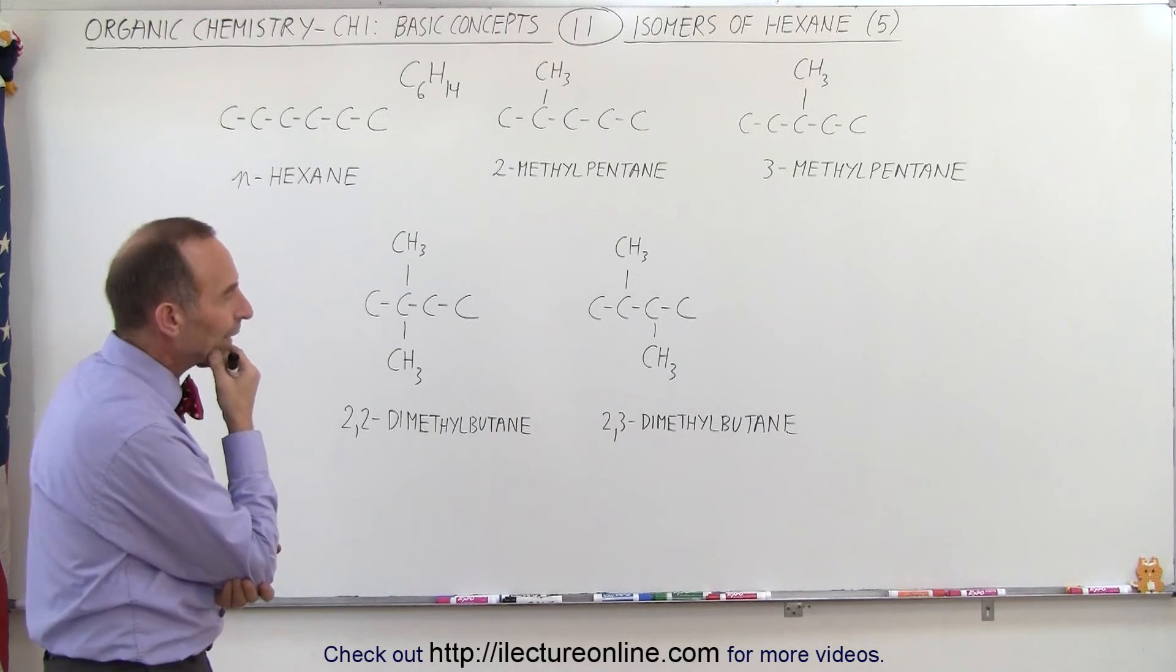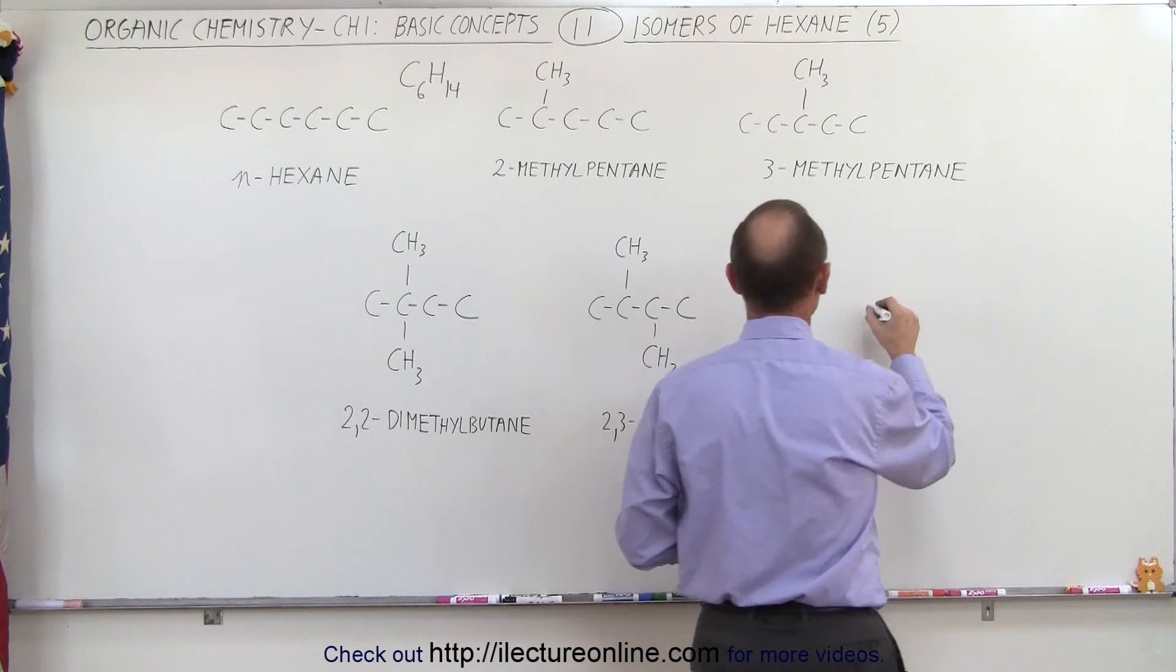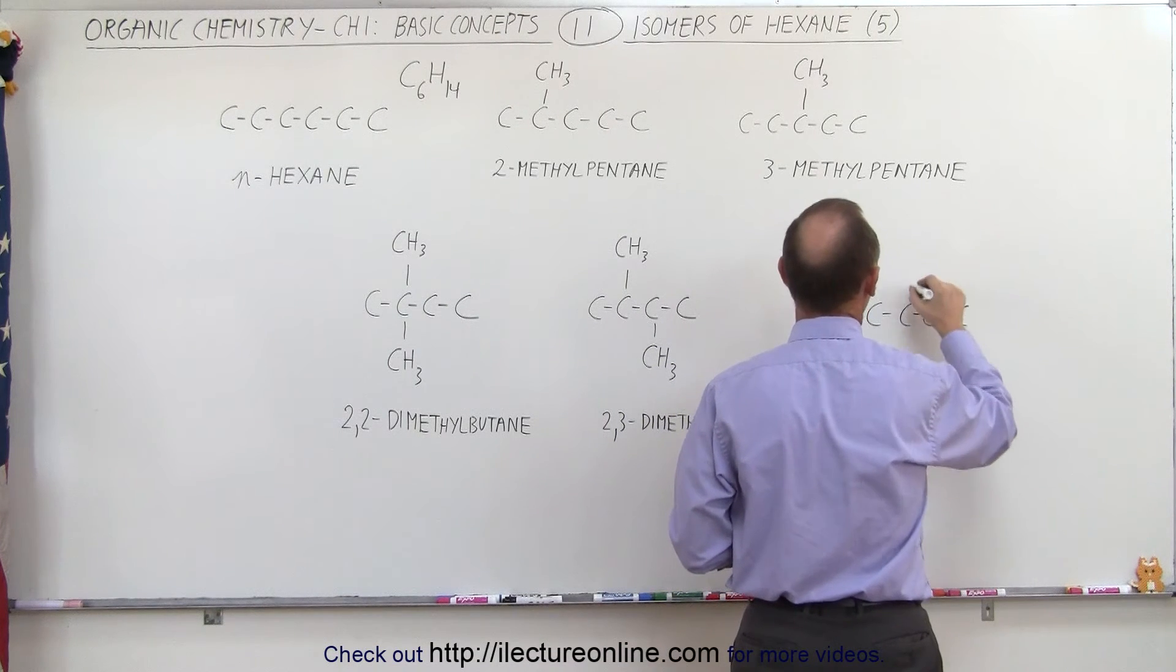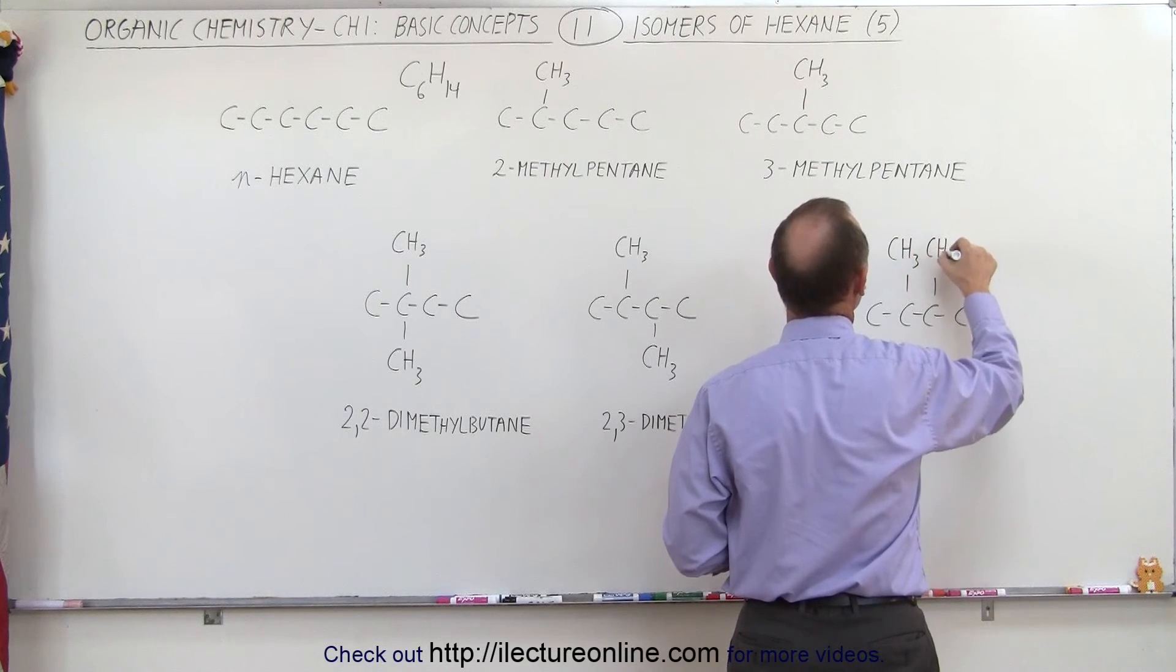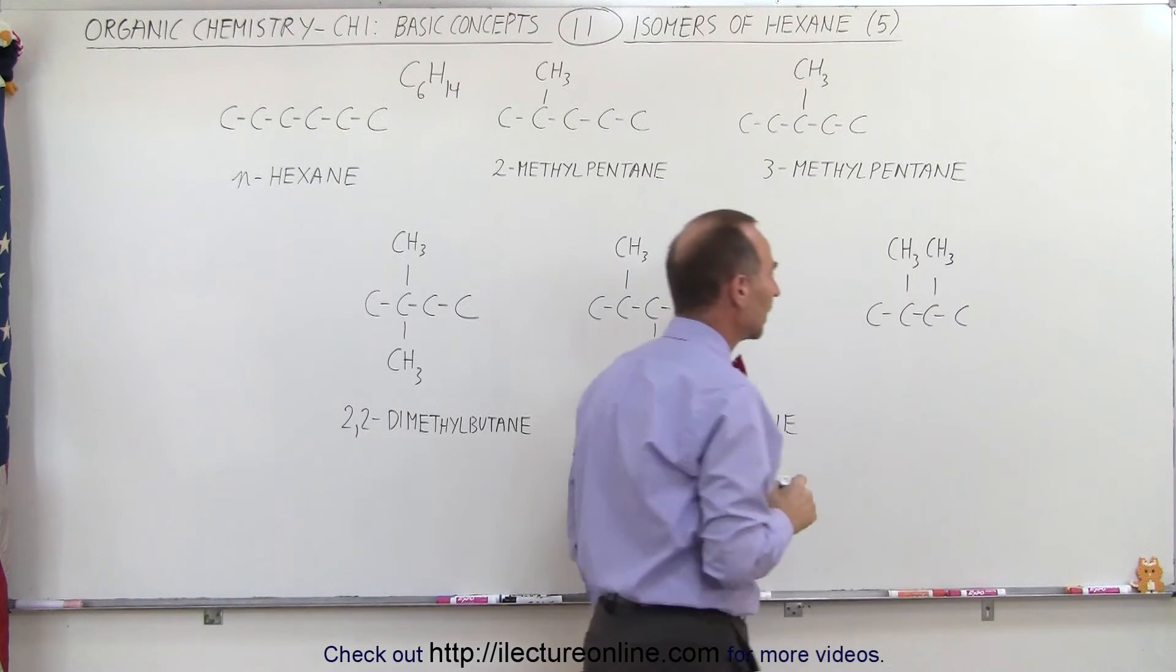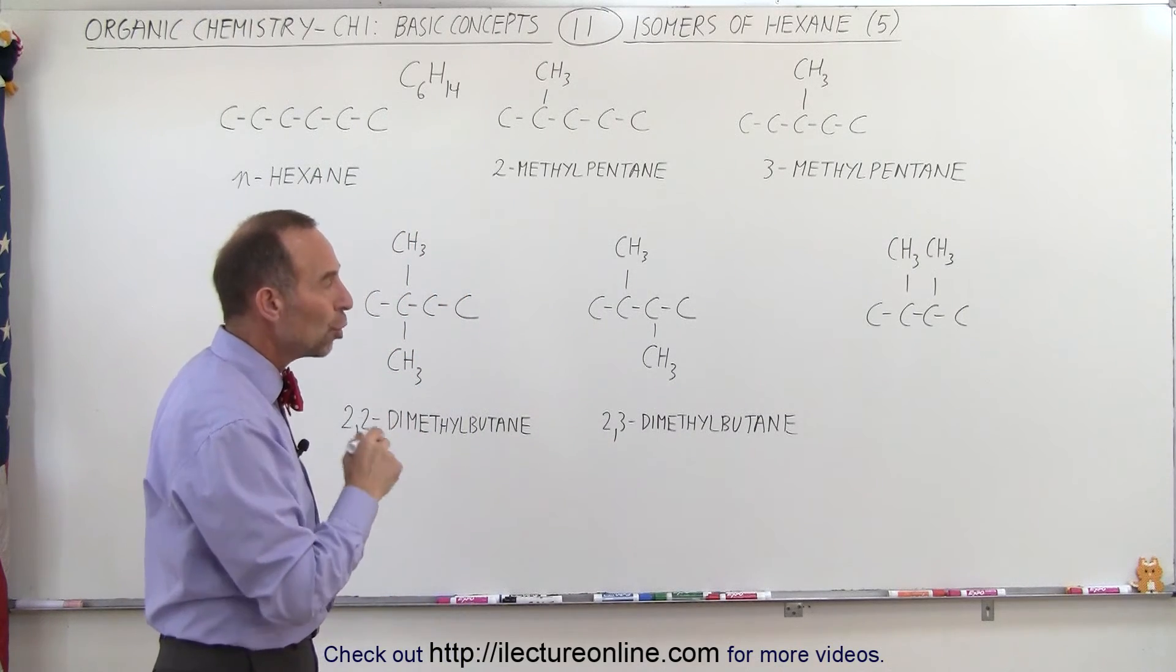But then you may say, well, can't we come up with another isomer? For example, could we do this instead? We have the four carbons, and then we connect the two methyl groups like this, CH3 and CH3. Is that a different isomer? And the answer is, no, it is not.